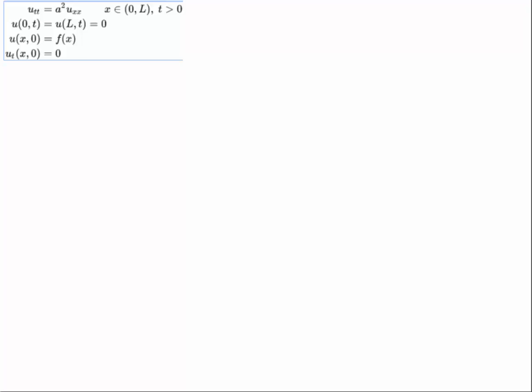Hello students. In this video we're going to solve the homogeneous wave equation. The solution to this equation will be a standing wave, and in a subsequent video I will demonstrate that the solution is indeed what we call a standing wave. You could think of a guitar string, for example — when you pluck it, it'll oscillate up and down. That'll be the physical interpretation of the solution to this wave equation.